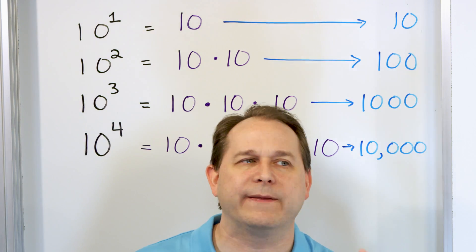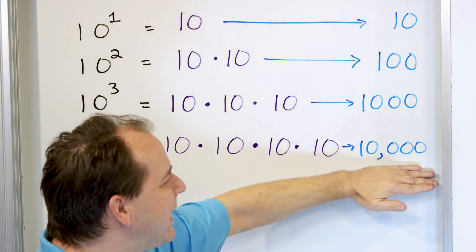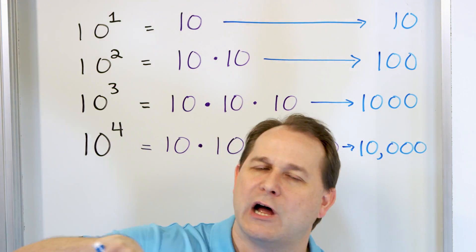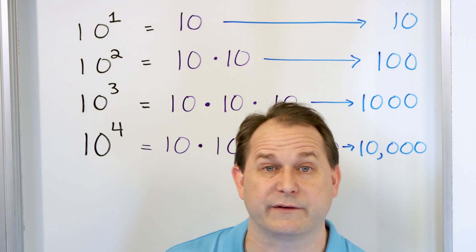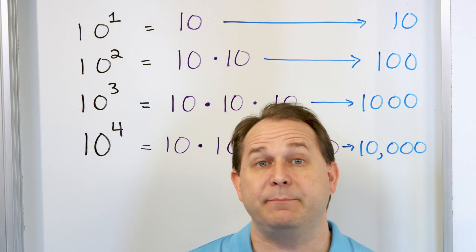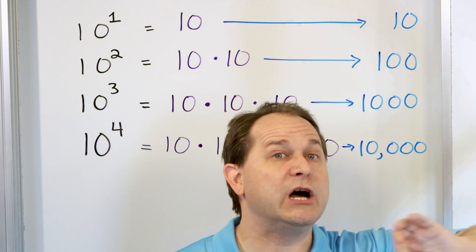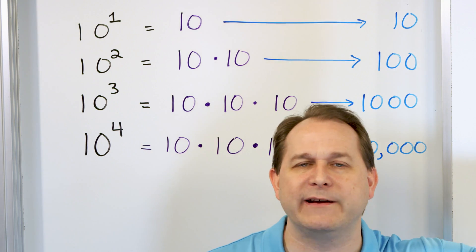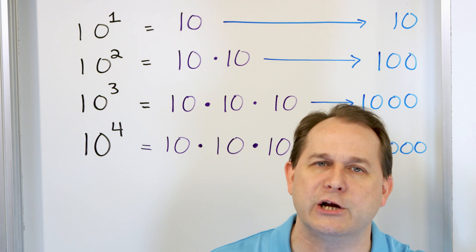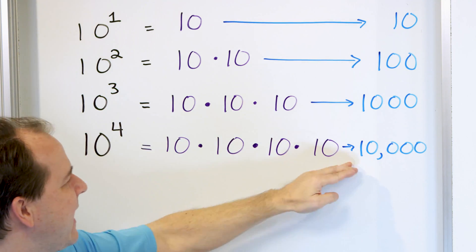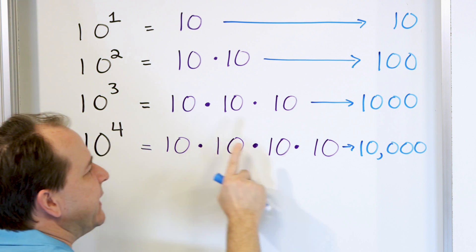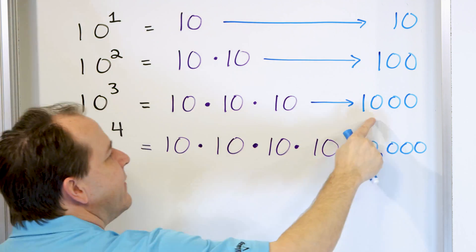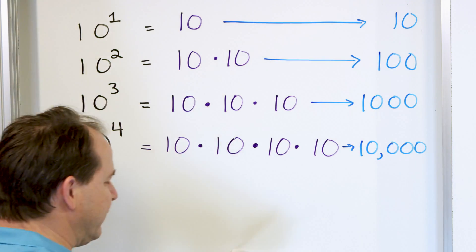Why do we write things with powers and exponents? It's because writing big numbers requires a lot of zeros. If you're talking about the size of the universe or the solar system in kilometers, it might be a one with a ton of zeros. When we write it with an exponent, we can shorten the number — it means exactly the same thing. The pattern is: whatever the exponent is, it's just a one with that many zeros following.